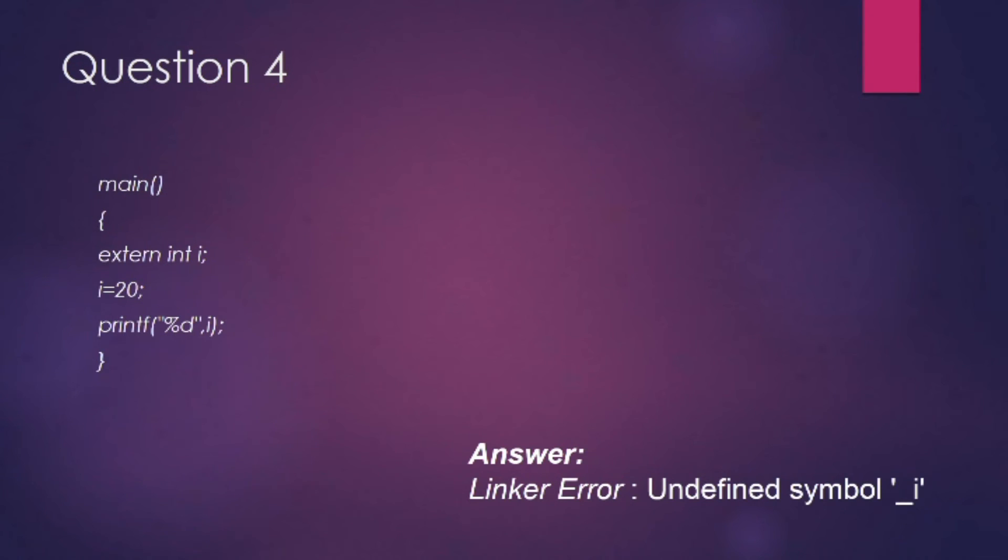Let's look at the fourth question. Here extern storage class is used for integer i, then i is assigned value 20 and we are printing value 20. What do you mean by extern? Extern integer i specifies to the compiler that memory for i is allocated in some other program and that address will be given to the current program at the time of linking. But the linker finds that no other variable of name i is available in any other program with memory space allocated for it, so a linker error 'Undefined symbol i' will occur.